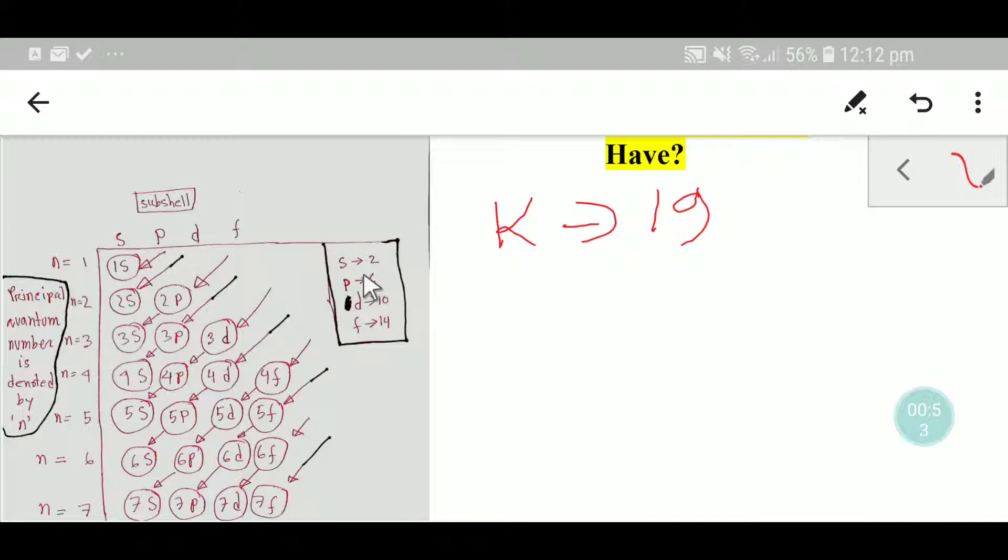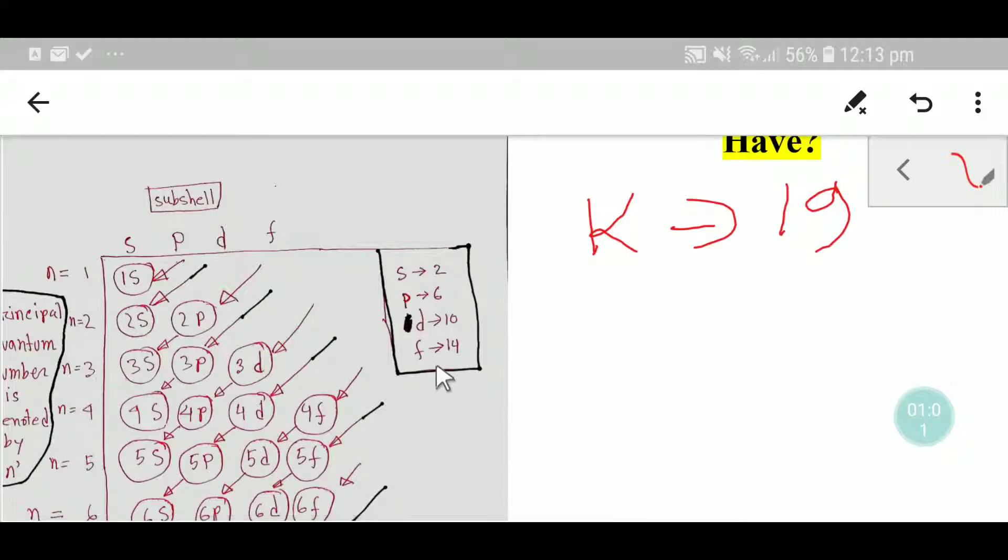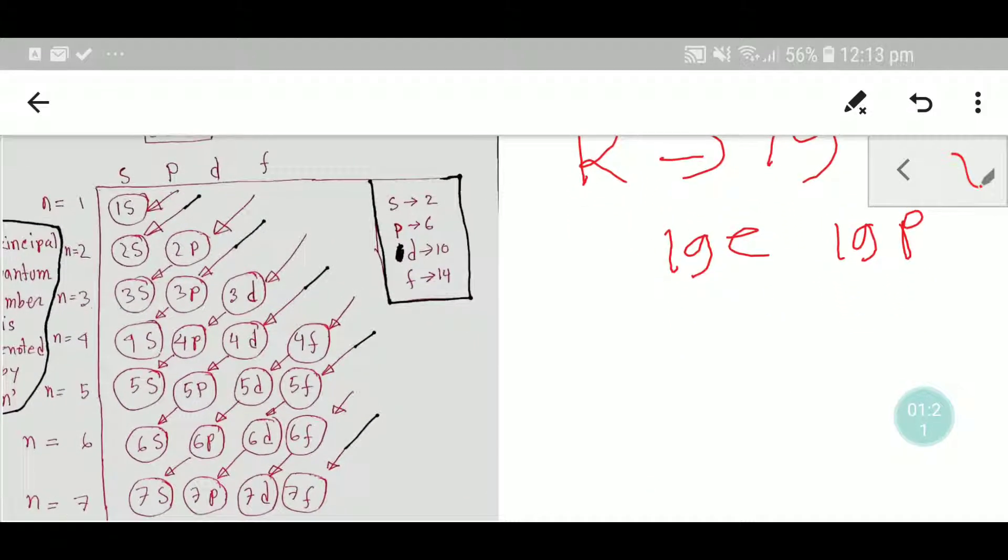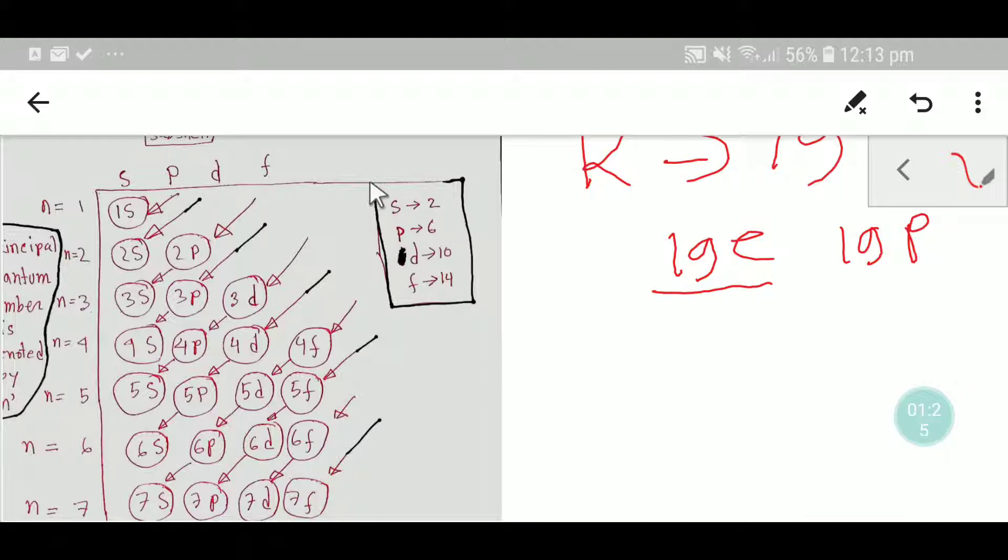Let me do the electronic configuration of potassium. Let me remind you: s subshell can take maximum 2, p can take 6 maximum, d can take 10, and f can take maximum 14. In potassium we have atomic number 19, that is we have 19 electrons and 19 protons. We will distribute these 19 electrons into different subshells or orbitals.